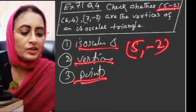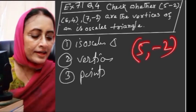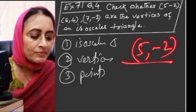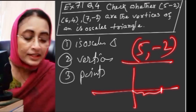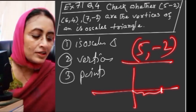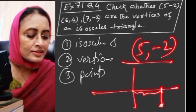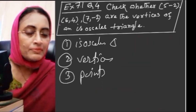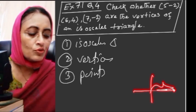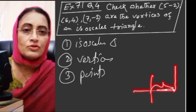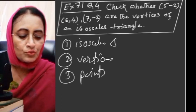The point (5,-2) means on the x-axis the value is 5 units and on the negative side of the y-axis it is -2. The point (6,4) means on the x-axis the value is 6 and on the y-axis the value is 4 — 4 in the positive direction.